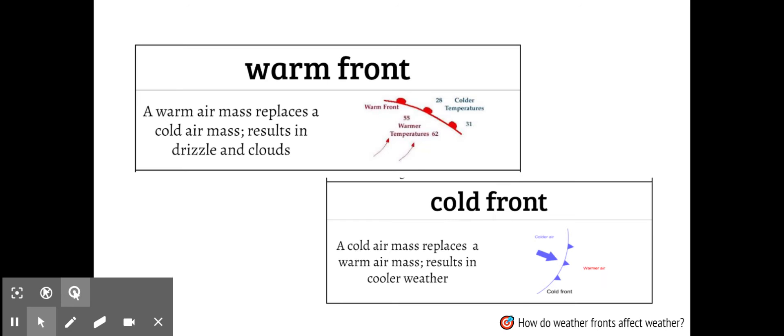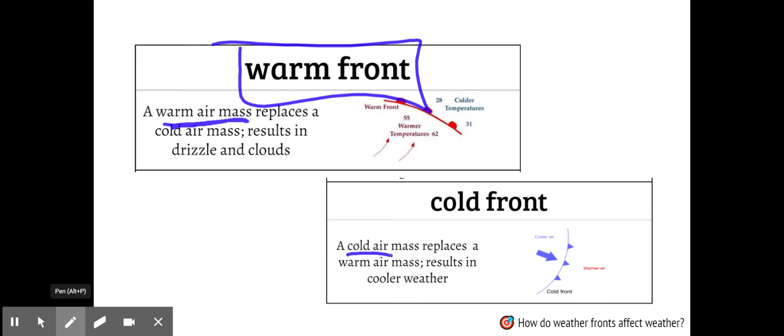Then we have two types of fronts: warm fronts and cold fronts. Remember we name that front based on what kind of air mass is replacing. So when a warm air mass is coming in, I have a warm front. When a cold air mass is coming in, I have a cold front.